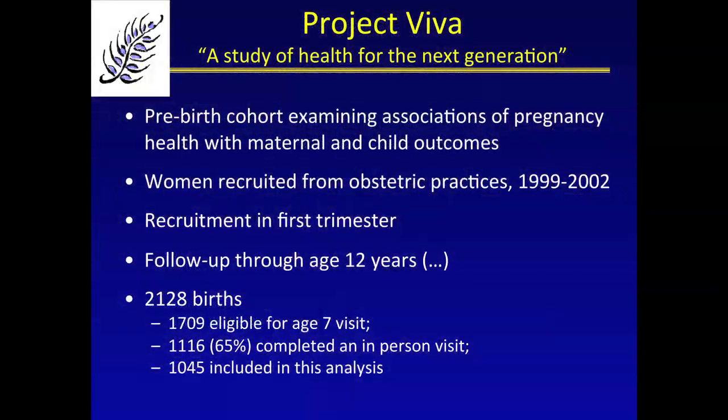In this same cohort, Project Viva — a pre-birth cohort examining associations of pregnancy health with maternal and child outcomes — we recruited women in their first trimester between 1999 and 2002. We've been following the women and the children are now turning about 12 years of age. We had about 2,100 births; of those, 1,700 were eligible for an age-seven visit. 65% completed an in-person visit where we measured height and weight, body mass index, and DEXA for fat mass index. And 1,045 of those are included in the analysis I'm about to show you.